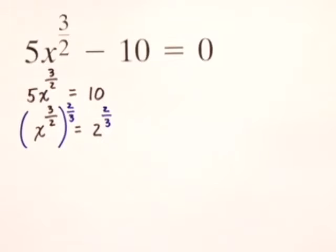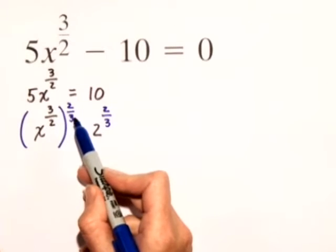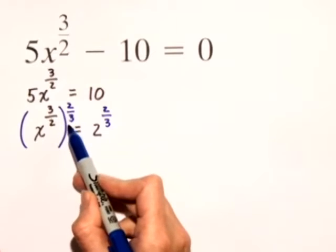The reason we're raising both sides to the 2 thirds power is because of the rules for exponents. Remember, when you have a base raised to a power raised to another power, you multiply those exponents.